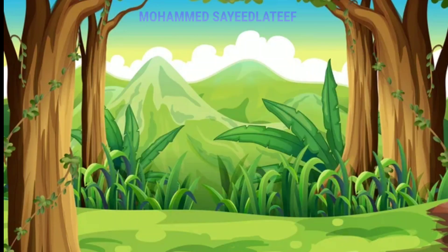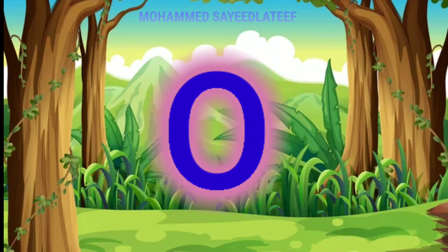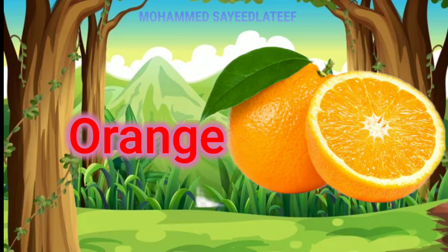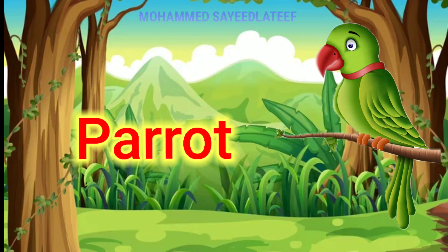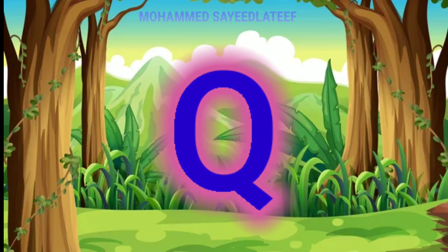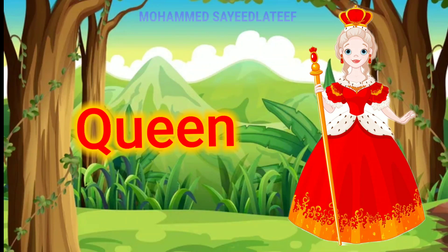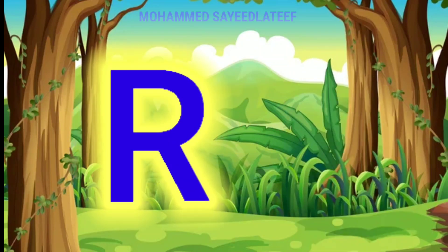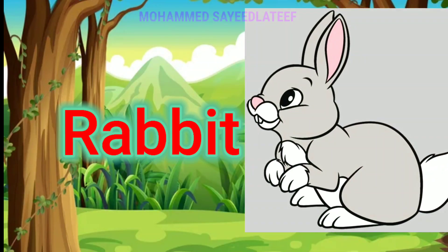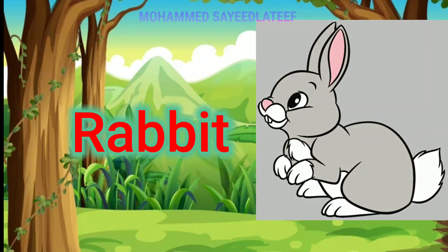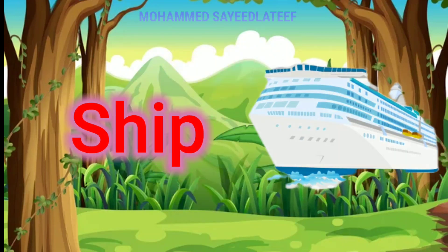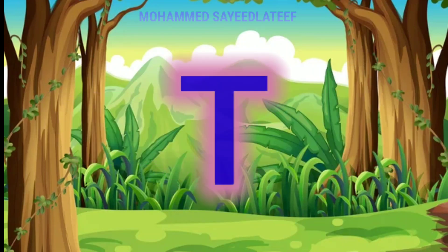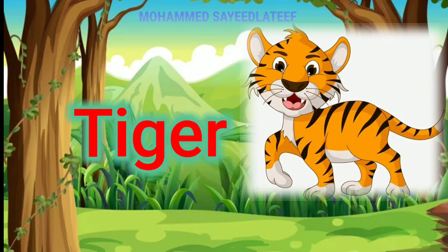M for mango, N for nest, O for orange, P for parrot, Q for a queen, R for rabbit, S for sheep, T for tiger.